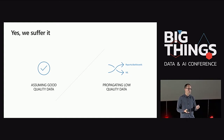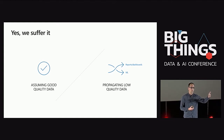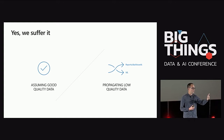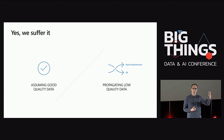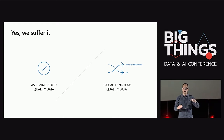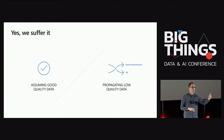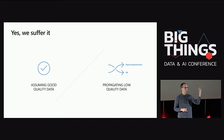Why do these data quality problems happen? First, because from day zero we are assuming that we have good quality data — and this is why we spend a lot of time performing queries, et cetera. Second, because we are propagating low data quality to different consumers: machine learning models, reporting, web apps, et cetera.